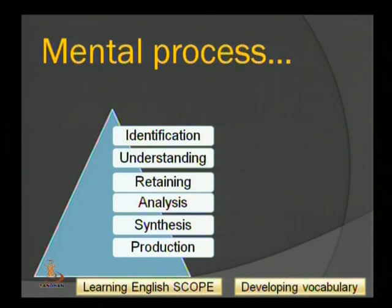The context will help us get the meaning. If we can't get it from the context, we have to make some efforts — those we shall discuss afterwards. But first, identification; after identification, we try to understand or guess the meaning through context, previous knowledge, or our experience range. After that, we try to retain the word in the mind.